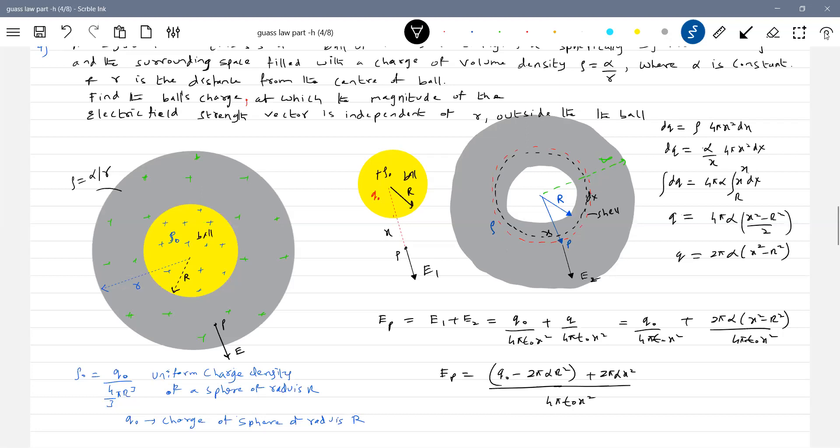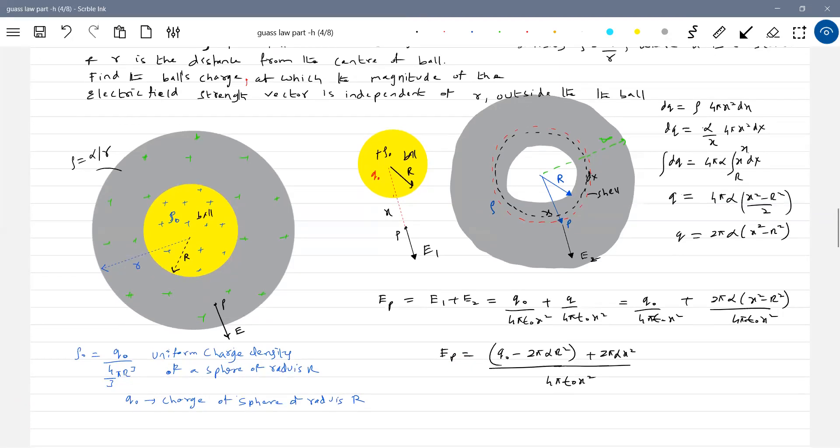When will E be constant? If the bracket term is constant. If the bracket term is equal to zero, then X² get canceled. Then the field simply will be constant. So for E_P to be constant, this must be equal to zero. Then only X² X² get canceled in the numerator and denominator. Therefore, what is the condition? Q₀ minus 2παR² equals zero.